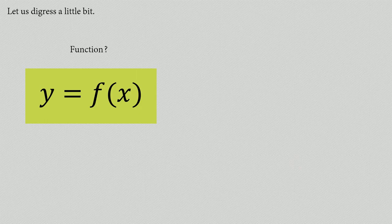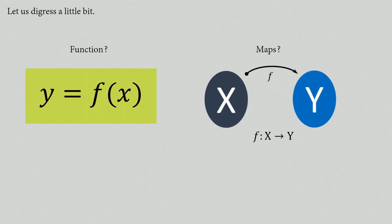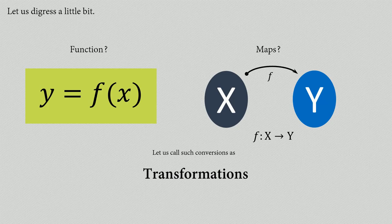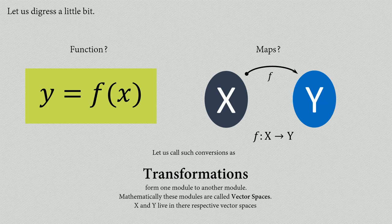We can also see this kind of relationship between two things like X and Y as a mapping, where F is a map from X to Y — all elements in X are mapped to all elements in Y by some map called F. We call all these conversions as transformations, a generic term, where these two modules are somehow related to each other. These modules are mathematically called vector spaces.